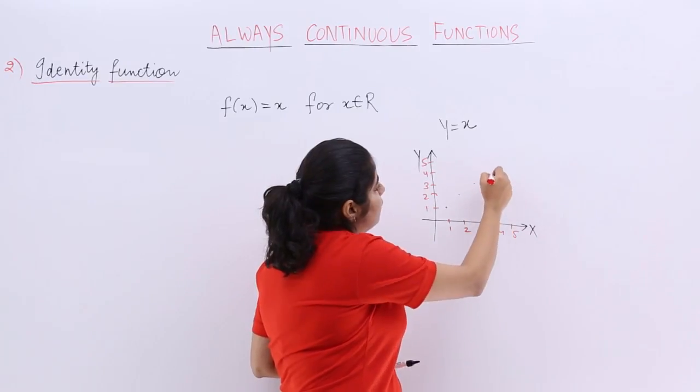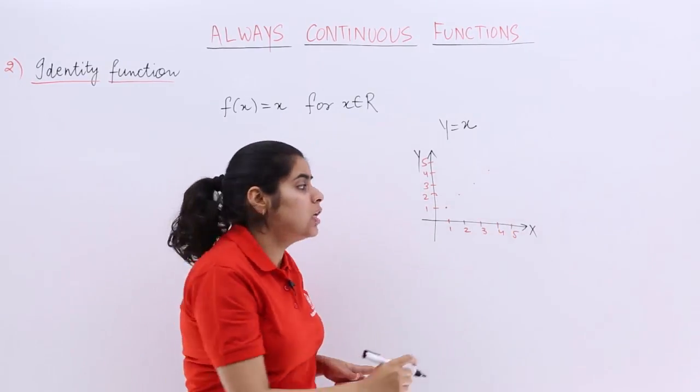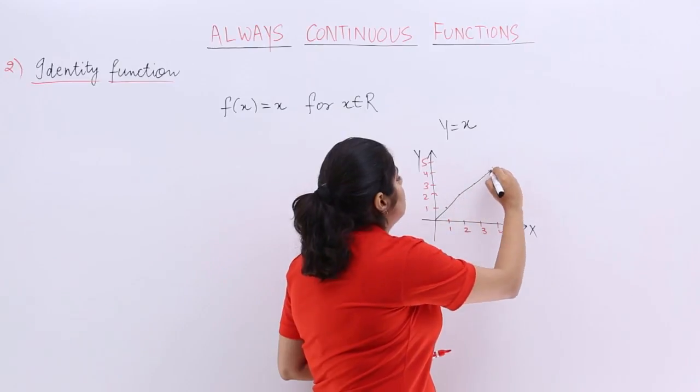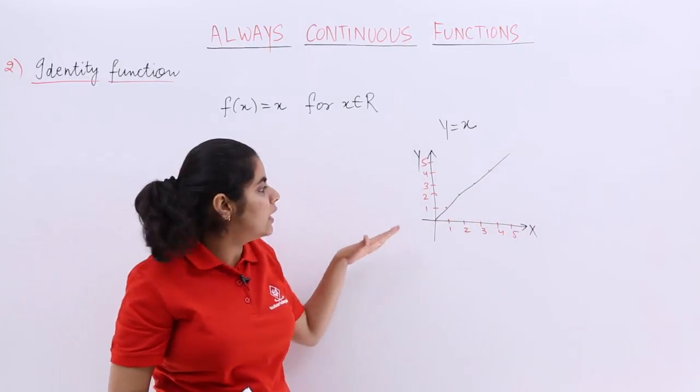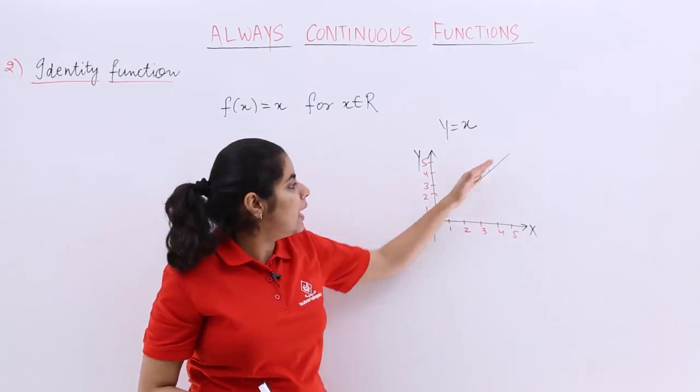When x is 3, y is 3; when x is 4, y is 4, and so on. Basically, y equals x will always be a straight line. If you draw it with a ruler or scale, it will be very straight.